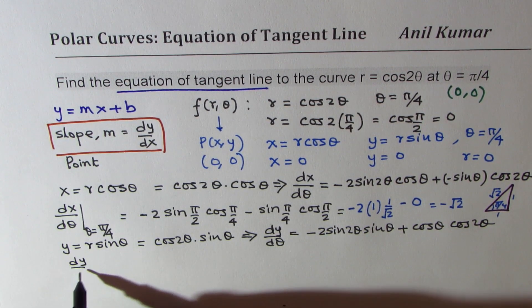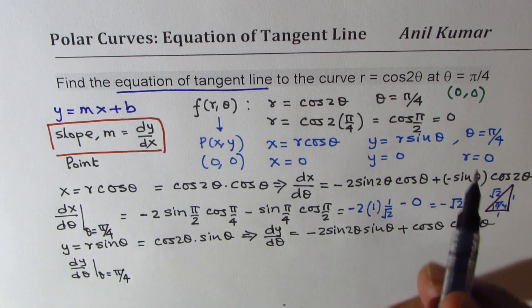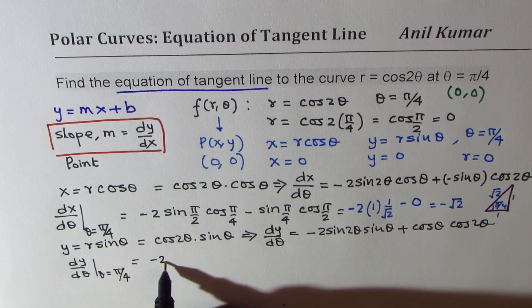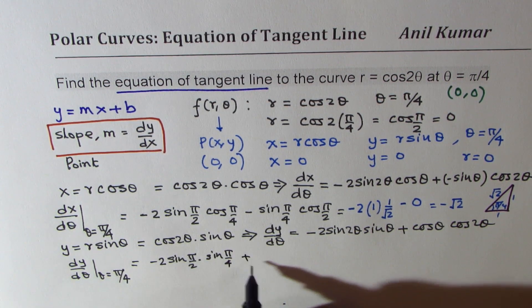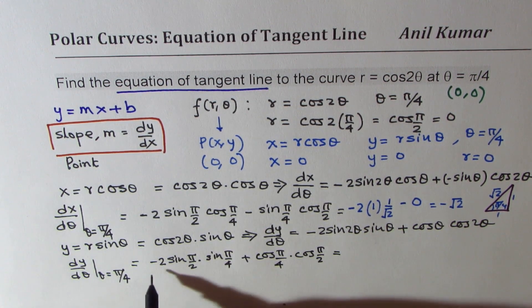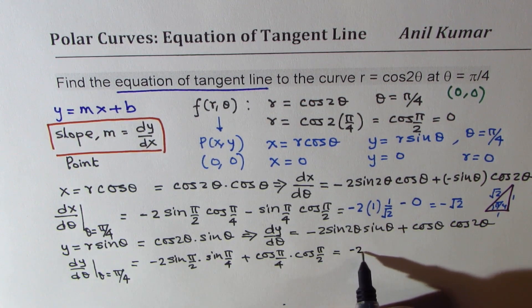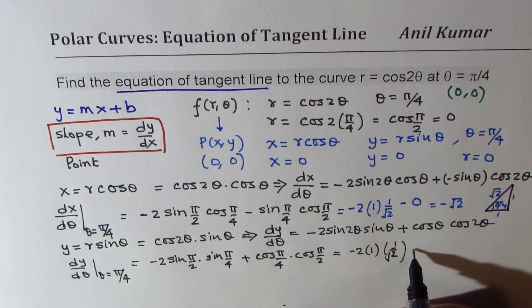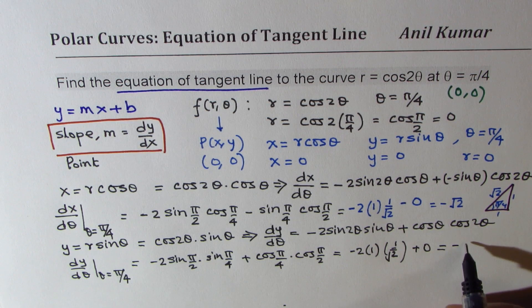Now dy d theta at theta equals pi by 4. We'll substitute pi by 4 again. So we get minus 2 sin pi by 2 times sin pi by 4 plus cos pi by 4 times cos pi by 2. Sin pi by 2 is 1, minus 2 times sin pi by 4 is 1 over square root 2, cos pi by 2 is 0, so we get plus 0. What we get here is minus 2 divided by square root 2, which is again minus square root 2.